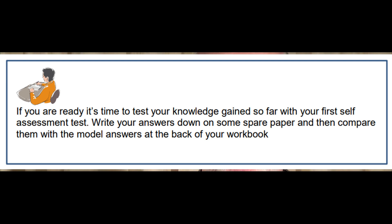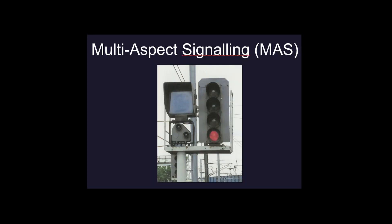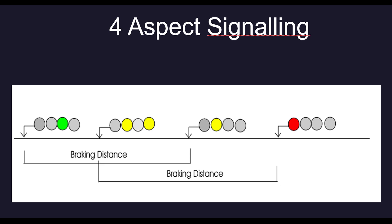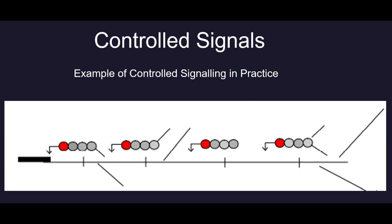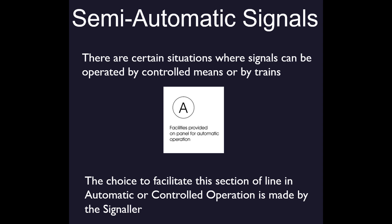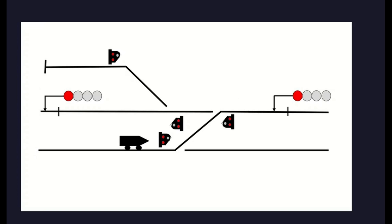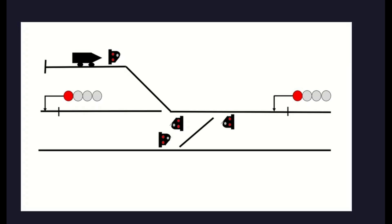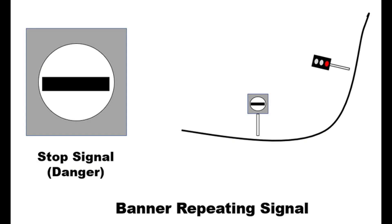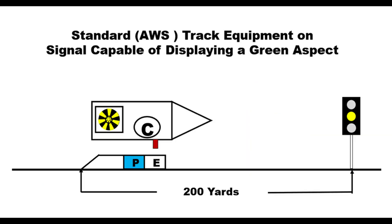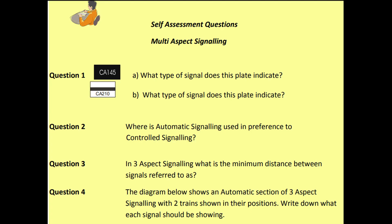Then it's back to the workbook to carry out a self-assessment test with answers to check your progression. Moving on to colour light signalling, we cover multi-aspect signalling — three-aspect signalling, four-aspect signalling, route indications, automatic, controlled and semi-automatic signalling — as well as other types of signals such as position light shunt and subsidiary signals, and banner repeating signals. Finally, the automatic warning system is covered, both in-cab and on-track equipment and operation. Back to the workbook to carry out another self-assessment test.